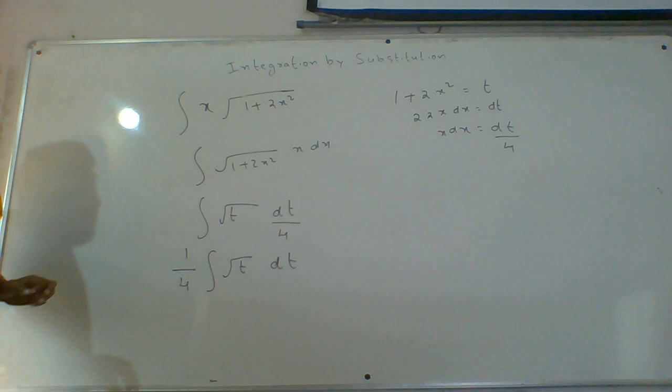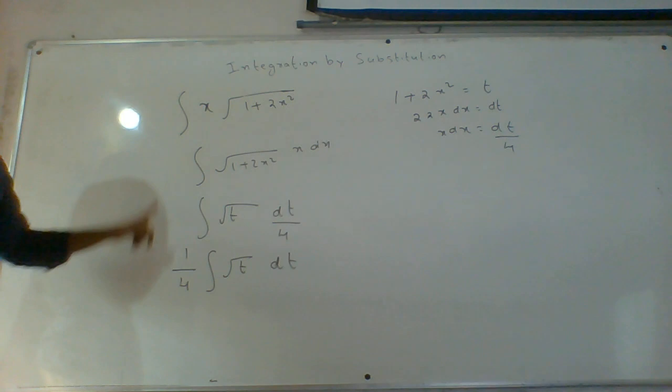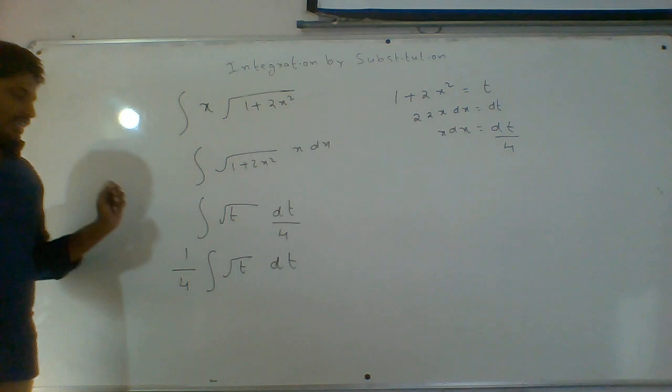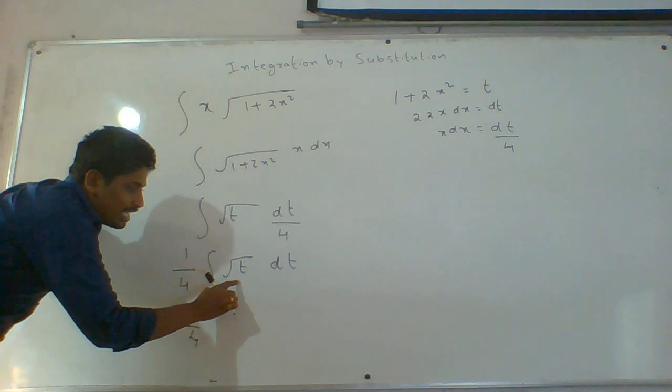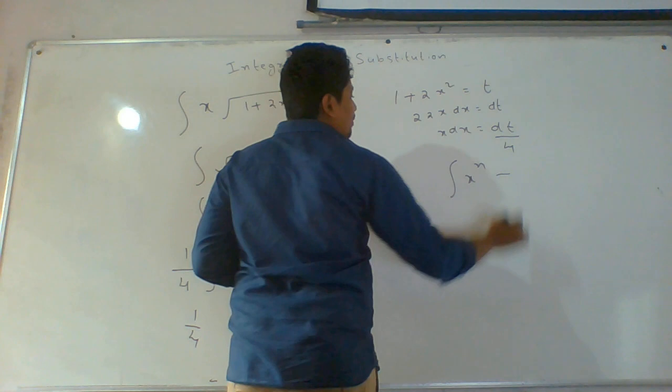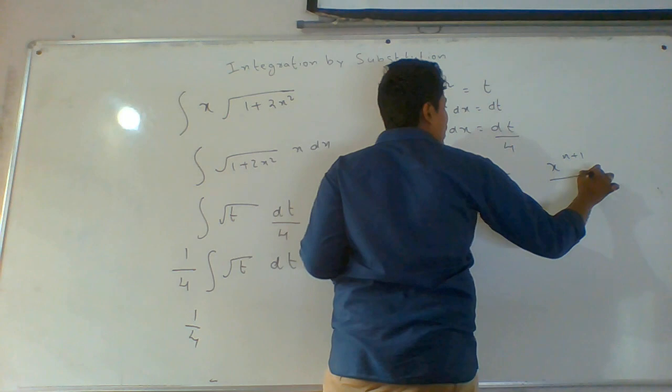Keep it in mind, till now we have not started the process of integration. We have only made the function compatible for integration. Root t can be written as t power 1 by 2, which is of the form integral x power n. The formula for integral x power n is x power n plus 1 by n plus 1.